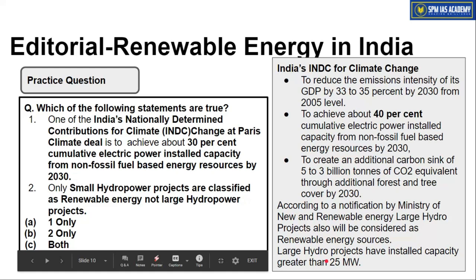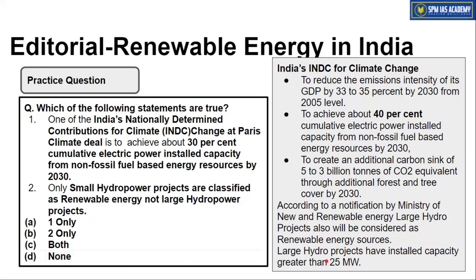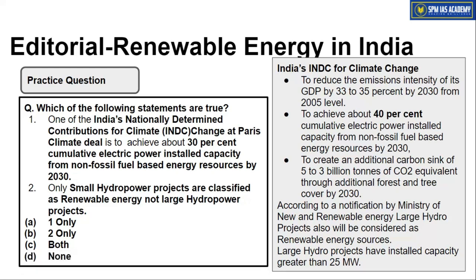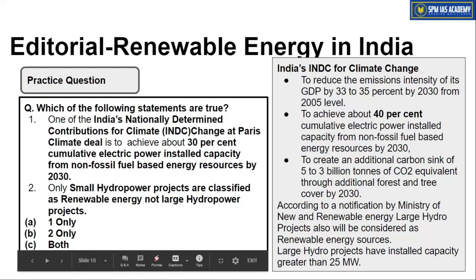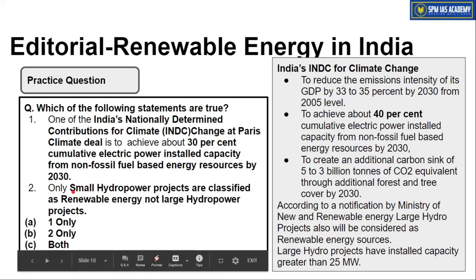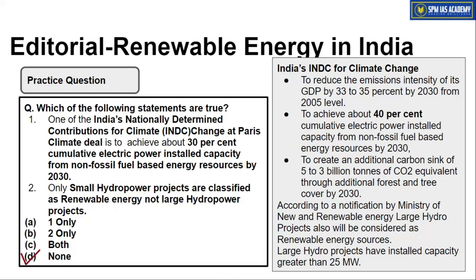Previously, only small hydro projects (defined as having installed capacity less than 25 megawatts) were counted as renewable energy. Projects above 25 MW were classified as large hydro projects due to their environmental impact — forests submerge and people must evacuate land. But now this classification has been removed by the Ministry of New and Renewable Energy; all hydro projects are now considered renewable sources of energy. So Statement 2 is also wrong, and the correct answer is D — none of the above.